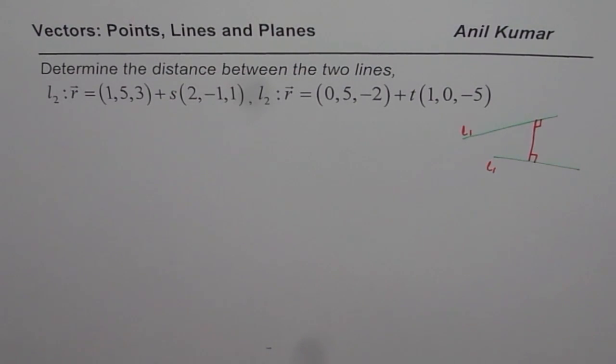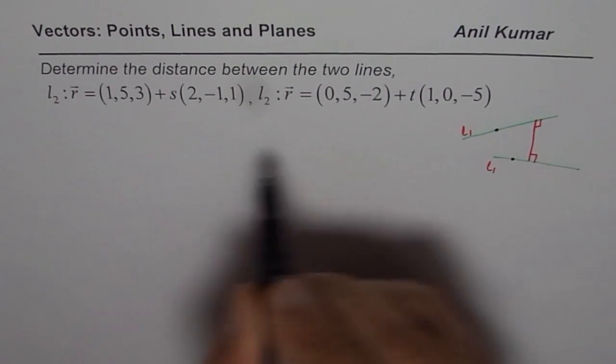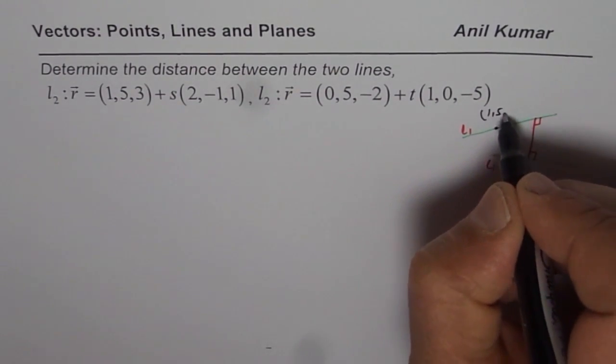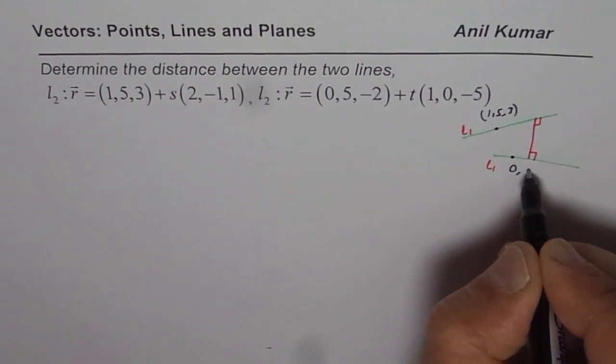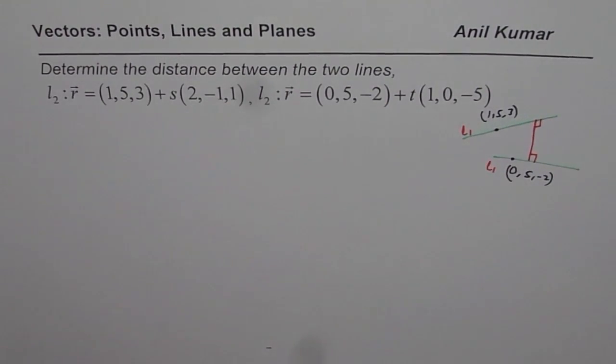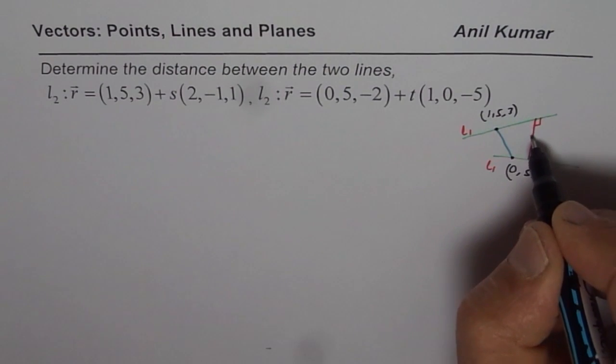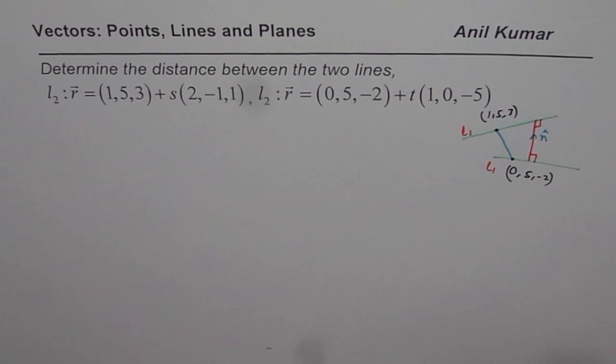Now, to find the distance, we take any two points on the lines. So, line 1 will take point (1,5,3), for example. And in line 2, we will take this point (0,5,-2). So, when you connect these points, that is not the minimum distance. But when you take a projection of this along the normal, that is the normal unit vector, you get the minimum distance between the points. I hope the concept is clear.